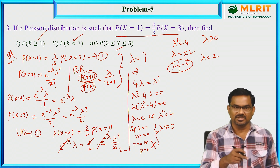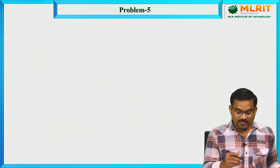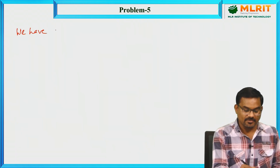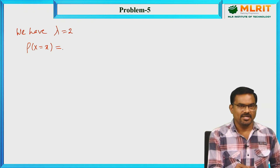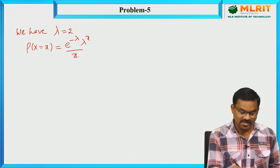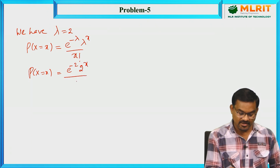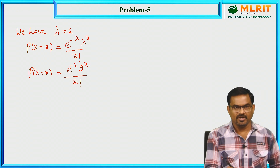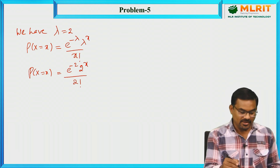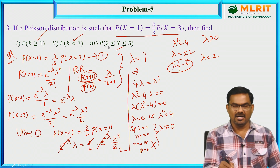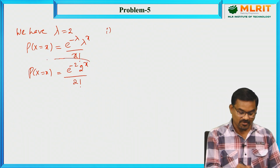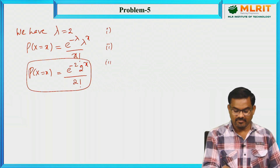Now with λ = 2, using the Poisson distribution formula P(X = x) = e^(−λ)·λ^x/x!, since λ = 2 this becomes e^(−2)·2^x/x!. By changing the value of x, we can calculate the probabilities for that number of successes. In the given problem, we need to find P(X ≥ 1), P(X < 3), and P(2 ≤ X ≤ 5). These three problems are given for practice to students.